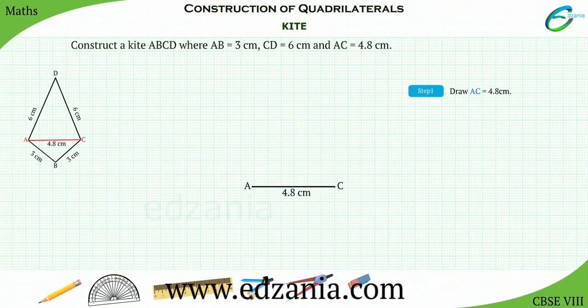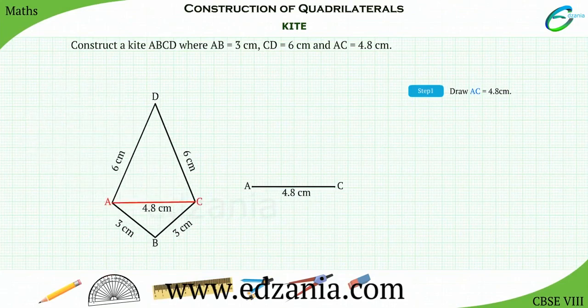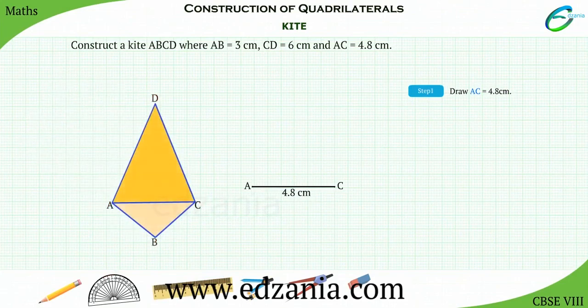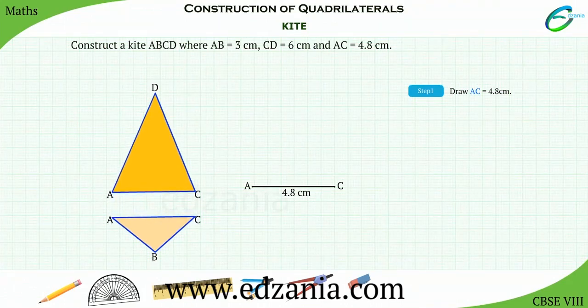Now, this diagonal AC divides the kite into two triangles, namely triangle ABC and triangle ADC.